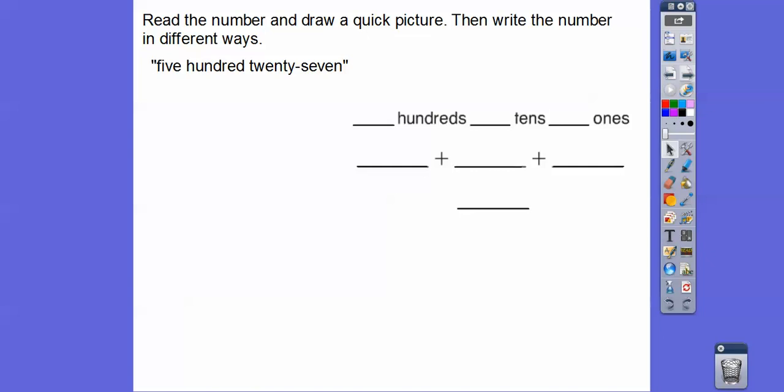Read the number and draw a quick picture. Then write the number in different ways. 527. So 500, we're going to have five hundreds right there. Draw little squares for our hundreds flats. And then 20 is our ten, so there's going to be two tens, and we'll draw two ten sticks. And then seven are our seven ones. So 500 would be 500, and then two tens would be 20. This five is in the hundreds place, so when it says five hundreds, 500. And then two tens is 20 plus seven right there. So 527 is our number.